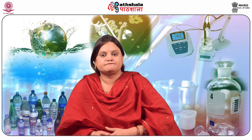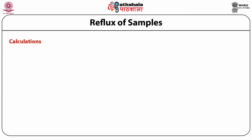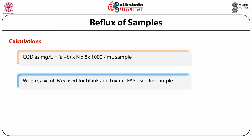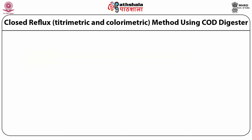The calculation is done using the formula: COD (mg/L) = [(A − B) × N × 8 × 1000] / ml of sample, where A is the ml of ferrous ammonium sulfate used for the blank, B is the ml of ferrous ammonium sulfate used for the sample, N is the normality of potassium dichromate, 8 is the equivalent molecular weight of oxygen, and 1000 converts the result to mg/L.